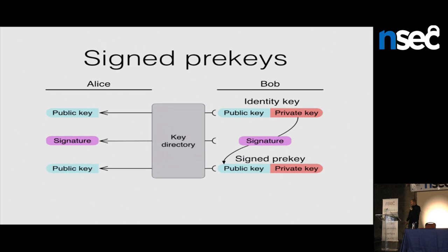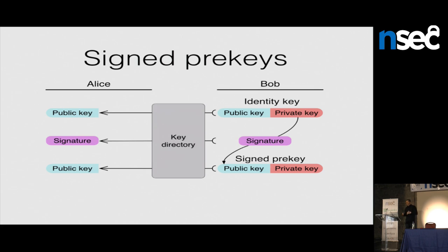An alternative is to use pre-keys that are signed and change on a timed basis. Bob uses his identity key pair to sign a signed pre-key public key and posts it. It's used for all first messages people send him for about a week, then he periodically signs a new key and replaces the old one. This fixes the problems with the one-time system: the key doesn't get used up, so he won't run out, and since it's signed, the key directory cannot lie about it and provide a false public key. The downside is it doesn't have as optimal forward security, because Bob holds onto that pre-key for a longer period.